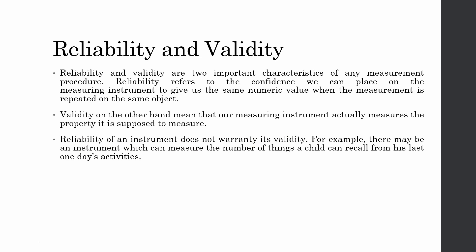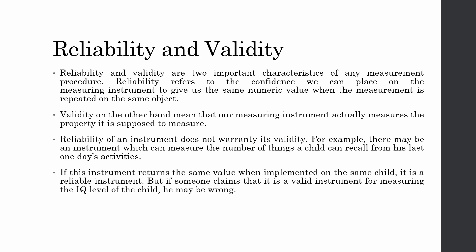For example, there may be an instrument which measures the number of things a child can recall from his last day's activities. If this instrument returns the same value when implemented on the same child, it is a reliable instrument. However, if someone claims it is a valid instrument for measuring the IQ level of the child, they may be wrong. Another example: imagine a wall clock in a room that always shows six o'clock — it is reliable because it always shows the same time, but it is not valid.